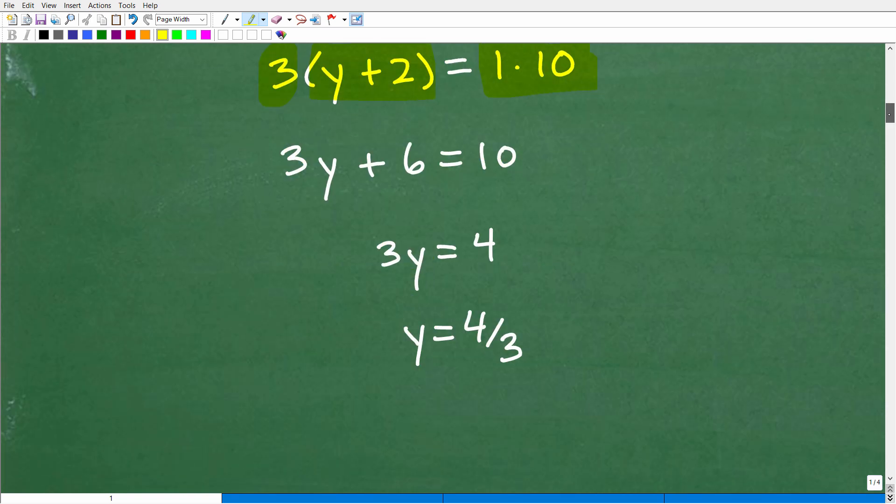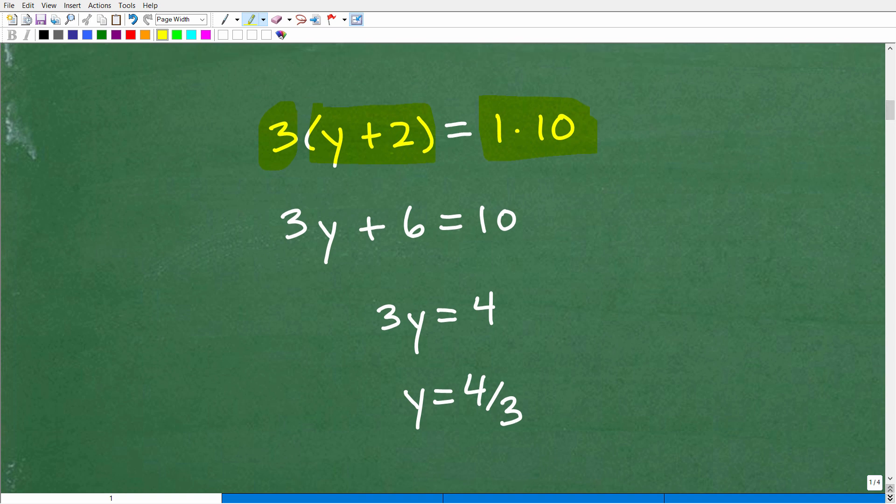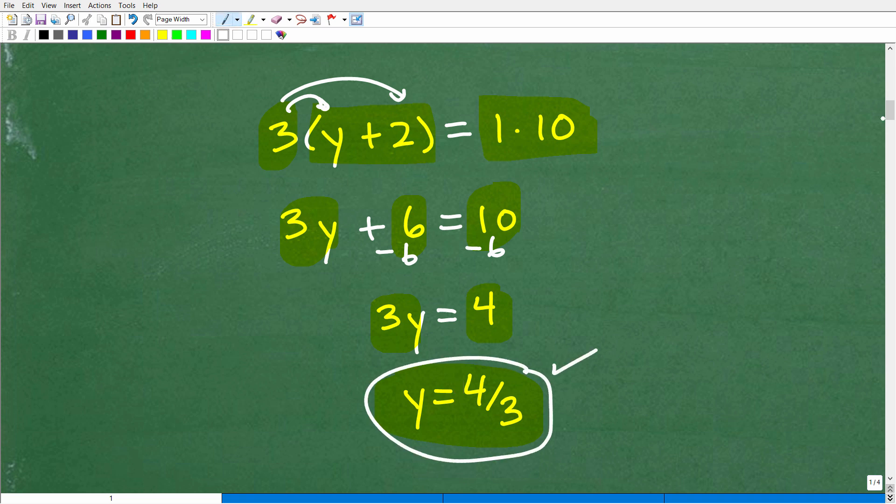So now we just need to go ahead and apply some basic algebra skills. So three times y plus two, I'm going to go ahead and distribute the three to y. So it gives me three y, three times two is six, one times 10 is 10. So to solve for y, now I need to go ahead and subtract six from both sides of the equation. And I get three y is equal to four, 10 minus six is four. And to solve for y, I'm going to go ahead and divide both sides of the equation by three. And there you go, y is equal to four thirds is the answer.